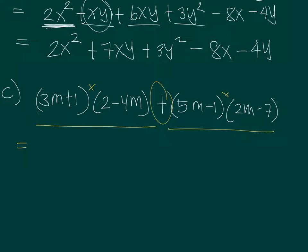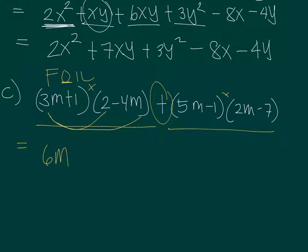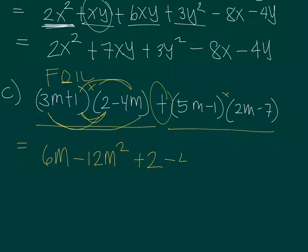Using the FOIL method on (3m + 1)(2 − 4m): First terms — 3m times 2 is 6m. Outer terms — 3m times minus 4m is negative 12m squared. Inner terms — 1 times 2 is positive 2. Last terms — 1 times minus 4m is negative 4m.